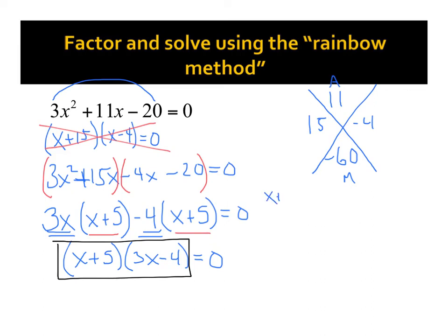I'm going to have x plus 5 equals 0, and I'll have 3x minus 4 equals 0. So if I subtract 5, I get x equals negative 5. That's one answer. The other one, I have 3x equals positive 4 divided by 3, and I get x equals 4 over 3.